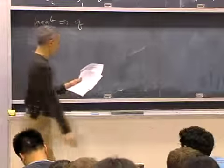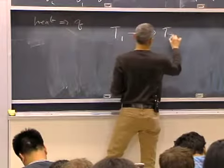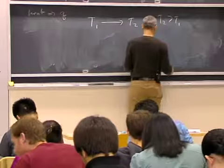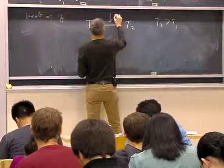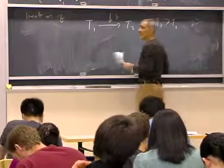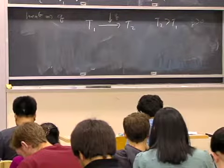And our sign convention is that if we change our temperature from T1 to T2, where T2 is greater than T1, then the heat is going to be positive. Heat needs to go into the system to change the temperature and make it go up.